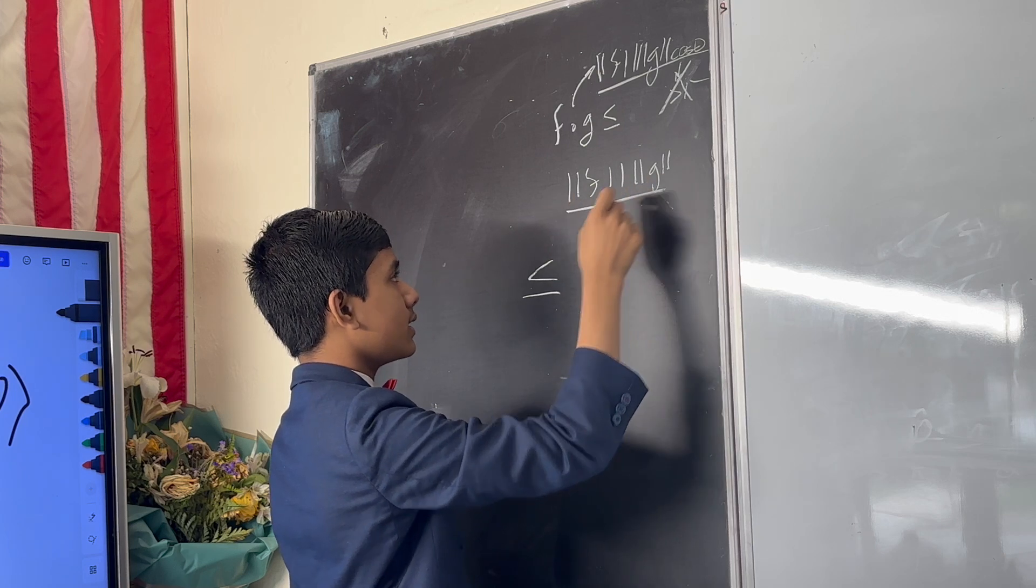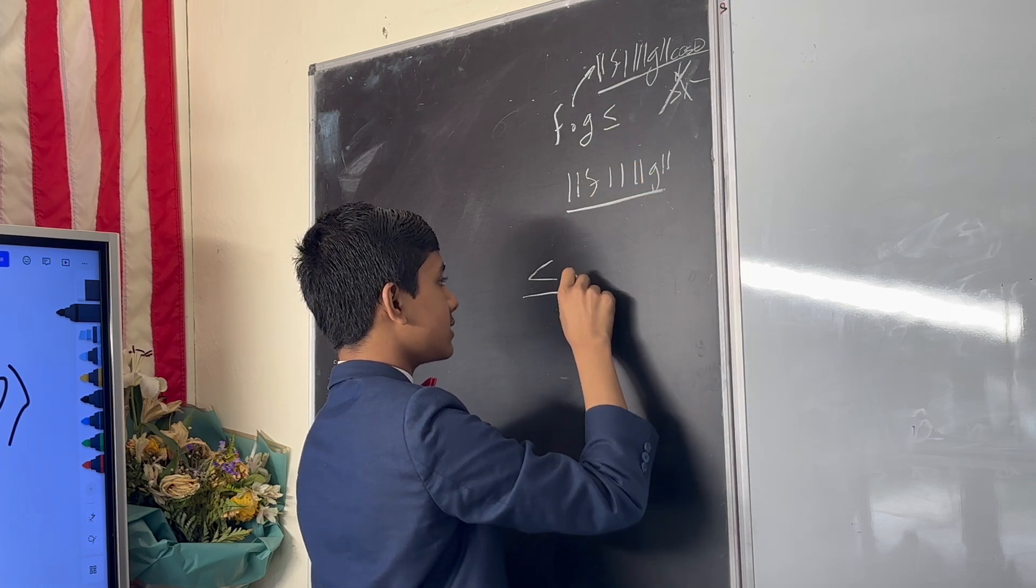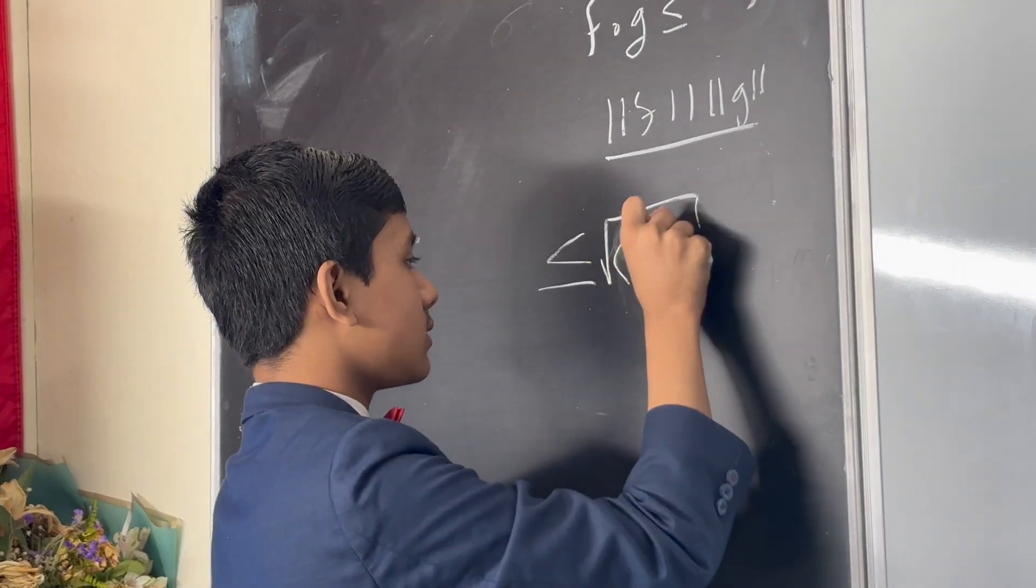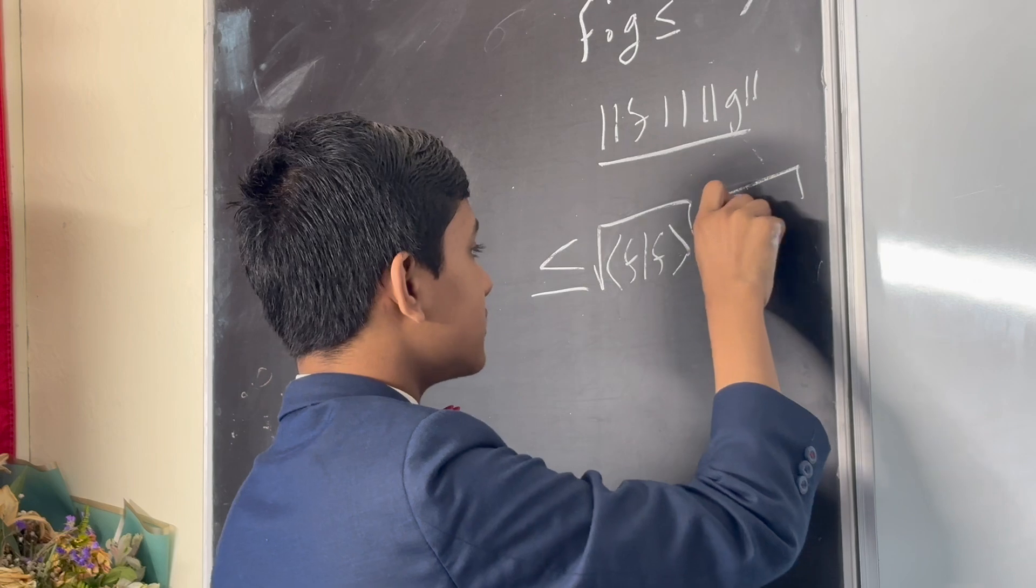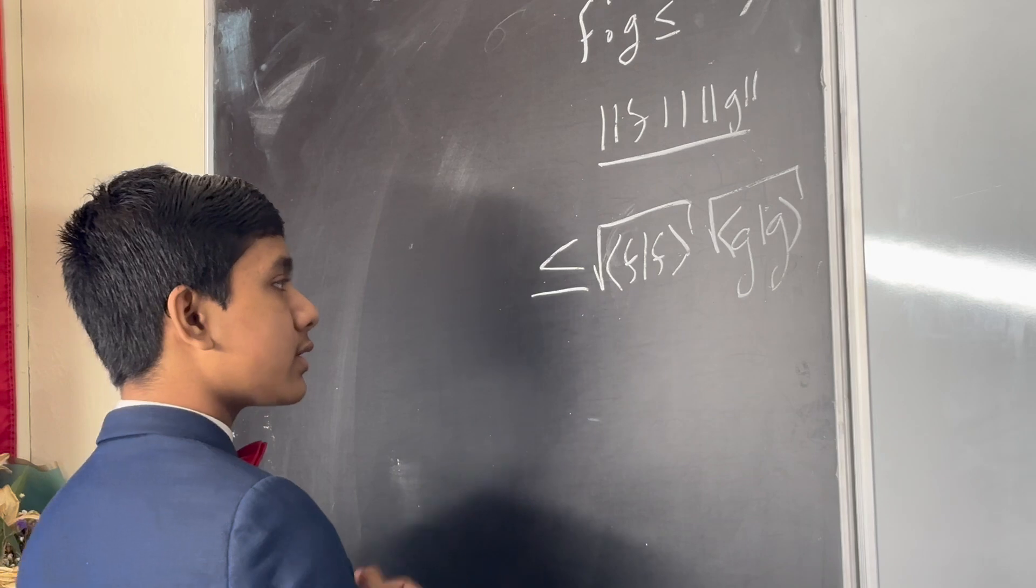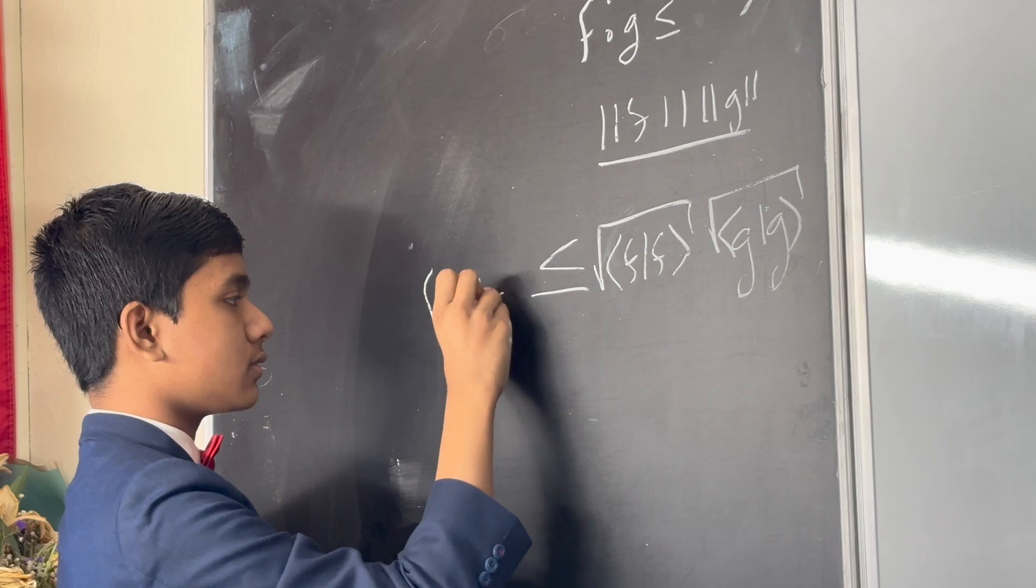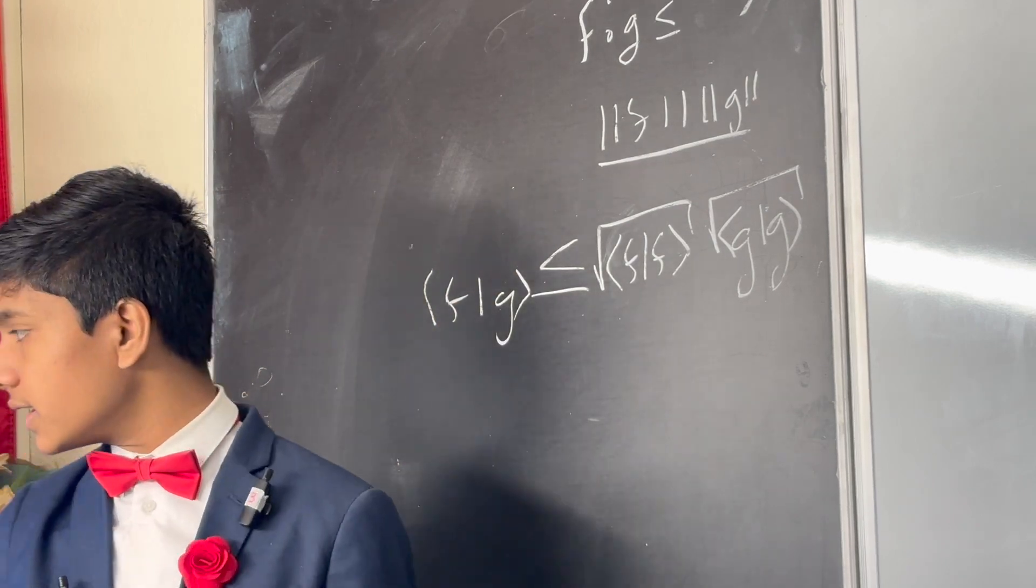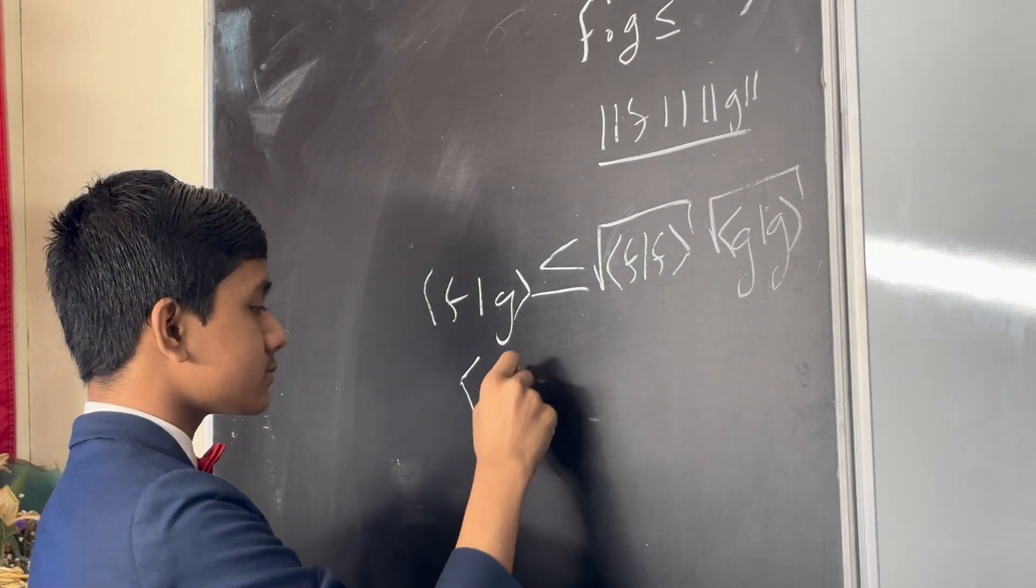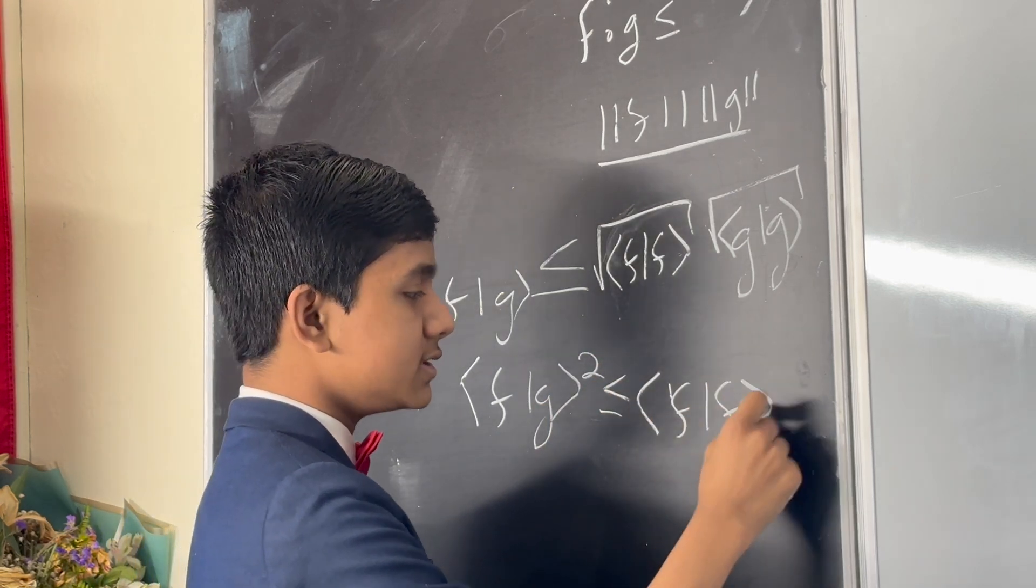So what is the norm here? Well, this is just going to be the square root of f dot f and the square root of g dot g. That's what the norm is defined as, and that's got to be greater than or equal to their product. Now if you square both sides, like we need to do here, you get that this is less than f dot f times g dot g.